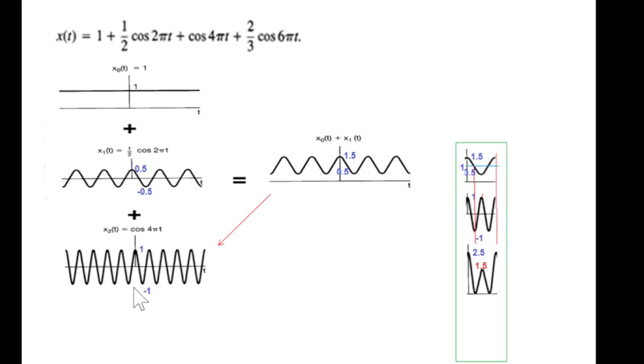You can try to manually add. This is 1.5, this point is one, so we'll have 2.5. Similarly you can add this point and this point, so you'll get a graph something like this. This graph is given in the book, so this is what we follow.